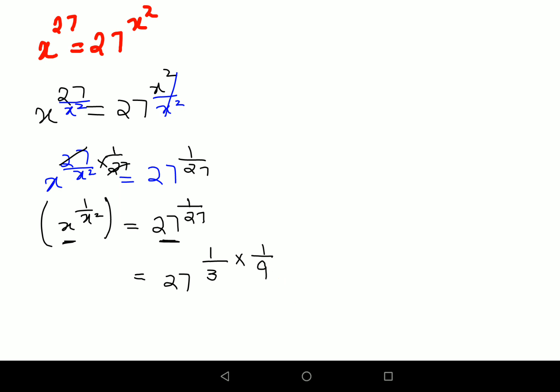If you look closely, 27 can be written as 3 cube the whole raised to 1 upon 3 into 1 upon 9. As you all know that a raised to m the whole raised to n can be written as a raised to m into n.